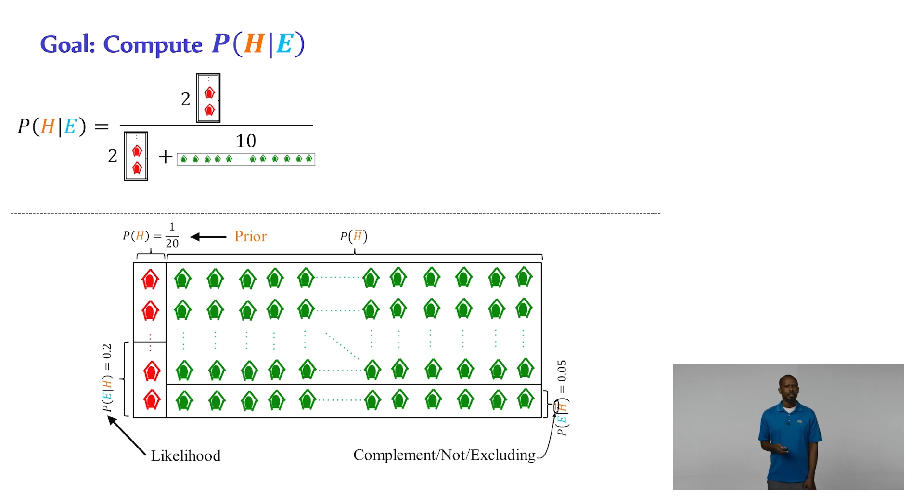So where did these numbers come from? The numerator or the two is the total number of buildings, shown as n subscript b here, times the prior probability that a random building in our sample is pre-code or the probability that our hypothesis is true, times the probability of the evidence given our hypothesis is true or the probability of collapse given that the random building is pre-code.